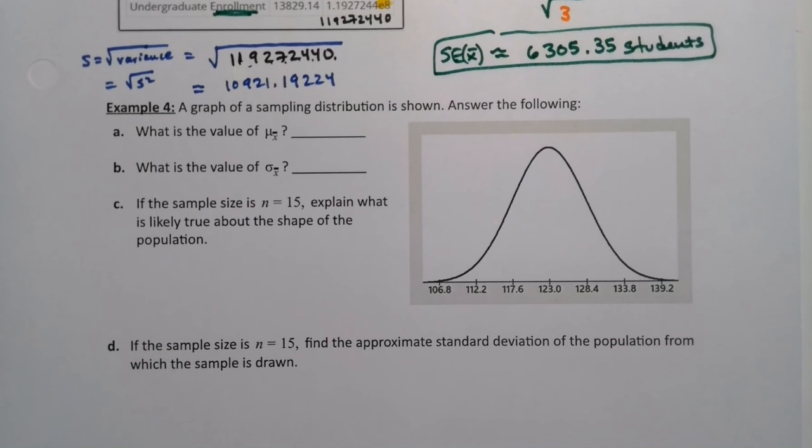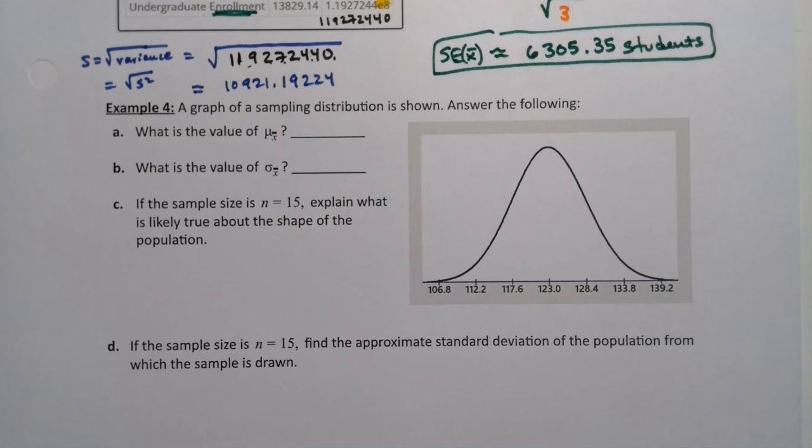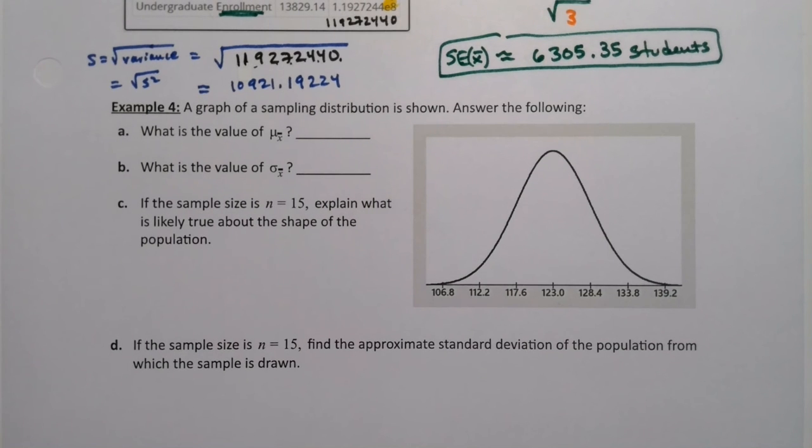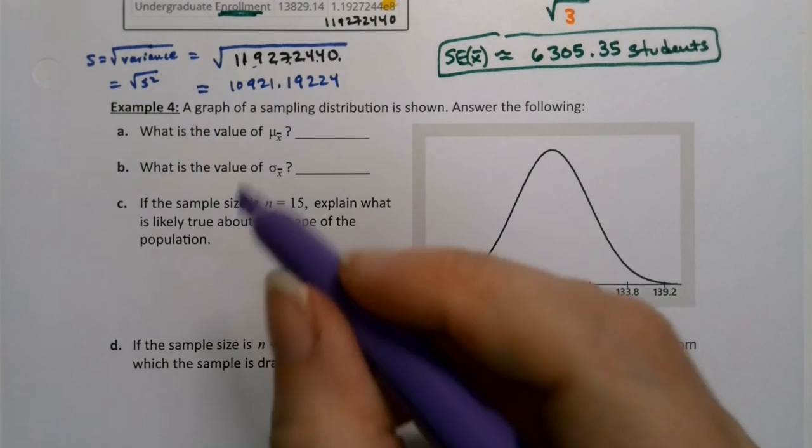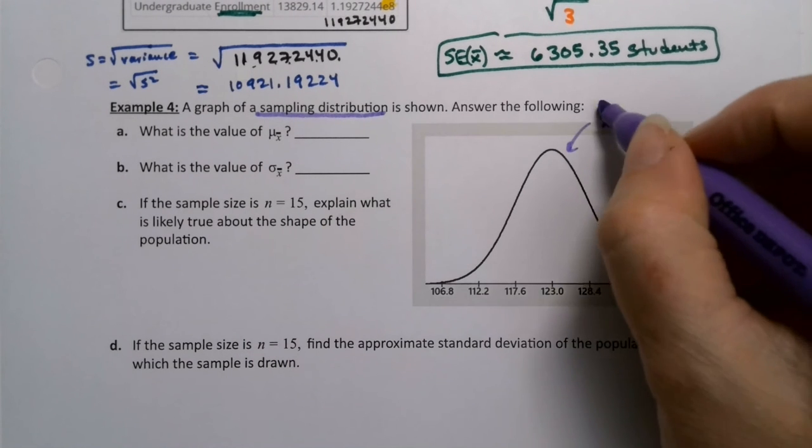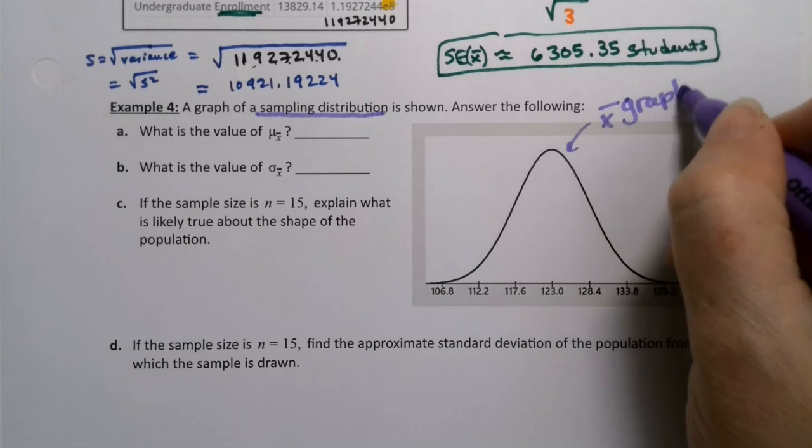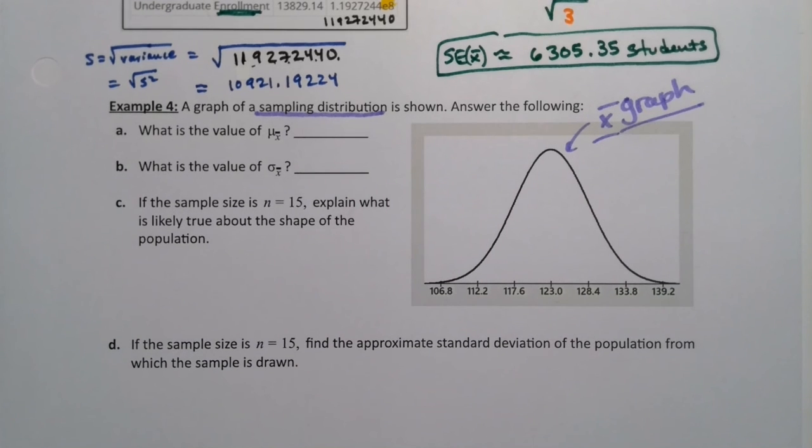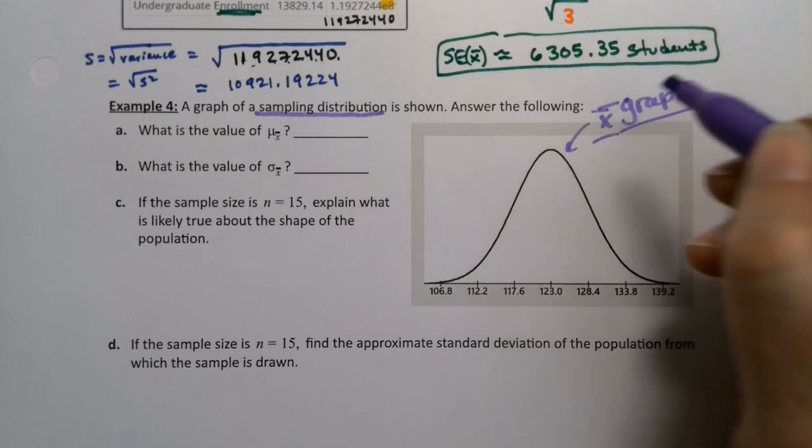Now the following is a graph of the sampling distribution. They want us to tell them what the value of the mean of x-bars is. What is the value of sigma of x-bars? So keep in mind, when they say this is a graph of a sampling distribution, what they're saying is that this curve is the x-bar curve. What you're looking at, if this is a sampling distribution, is these are the x-bars. It's a graph of x-bars, not the population.